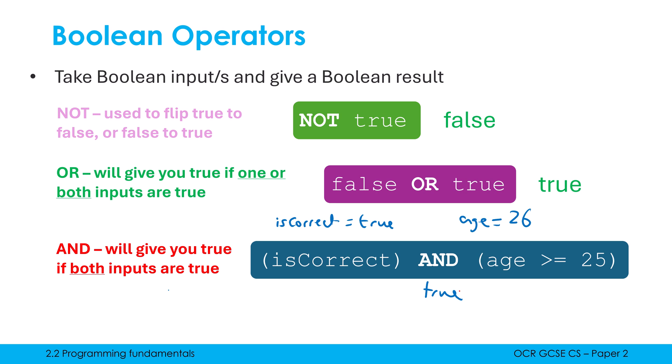So we'll look at plenty more examples where we're using a combination of both Boolean and comparison operators, and it's important you have a really clear distinction between OR and AND in particular.